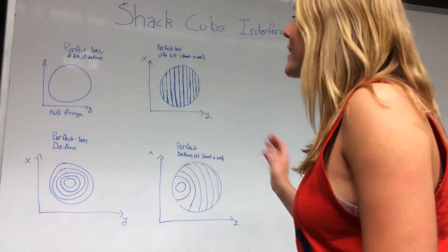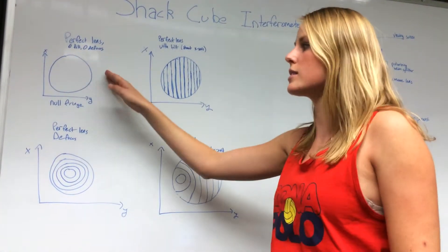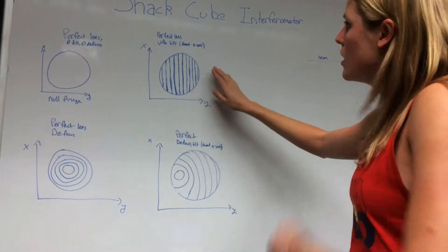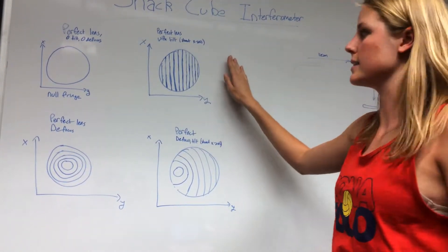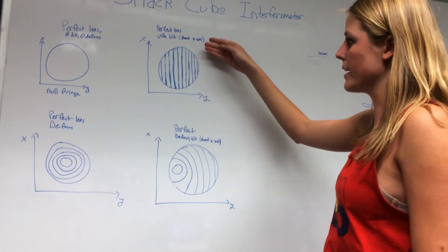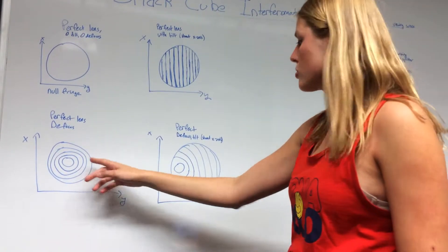So our interferogram with the Shack cube interferometer, for a perfect lens with no aberrations, no tilt, no defocus, you should see just a null fringe, just an even fringe. With the perfect lens with just tilt, we'll see these vertical fringes. That's tilt about the x-axis. You can see the axes here are defined. So it's even parallel straight fringes, and then for a perfect lens with just defocus, you get concentric circles.